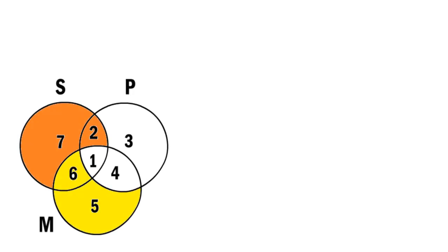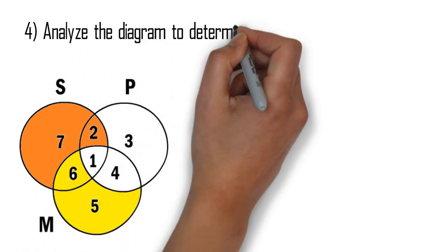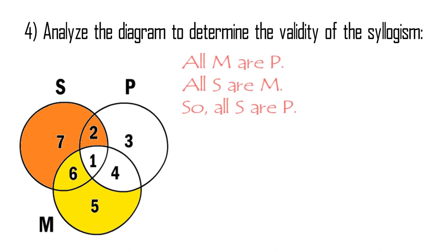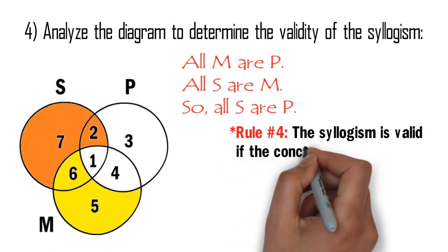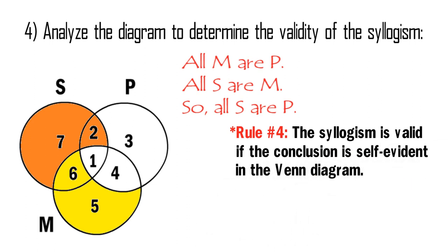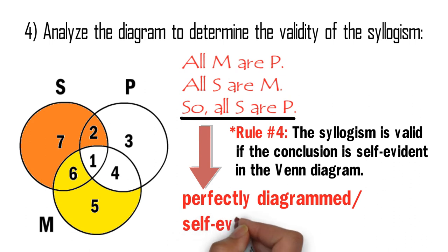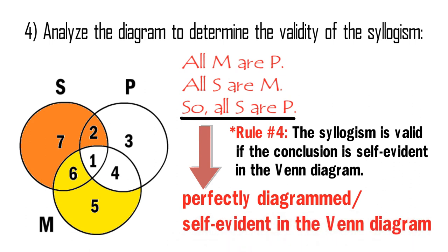Since the Venn Diagram of the syllogism is now complete, let us analyze the diagram to determine whether the syllogism is valid or invalid. As Rule 3 says, we diagram only the premises — hence we do not diagram the conclusion. And as Rule 4 says, the argument is valid if the conclusion is self-evident. The conclusion says: all S are P. As we can see, this conclusion is perfectly diagrammed — it is self-evident. Since areas 2, 6, and 7 are shaded, they do not exist anymore. What is left of class S is area 1, which all belongs to P. Thus, this syllogism is valid.